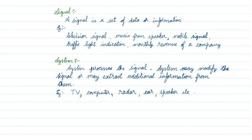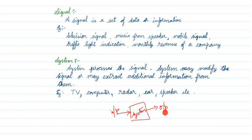For example, with a speaker: the input is a weak analog signal, and by increasing the amplitude you get a good sound at the output — so you are modifying the signal. Similarly, a pen drive input is digital but the movie output is analog. TV, computer, radar, car, and speaker are all systems. When you press the accelerator, you give an input signal and the car moves forward — that is a system with input and output.